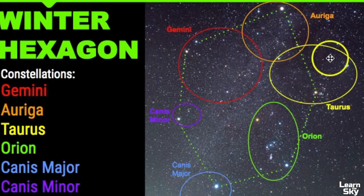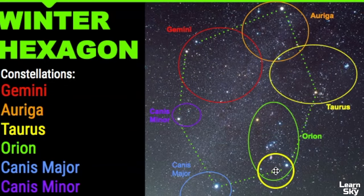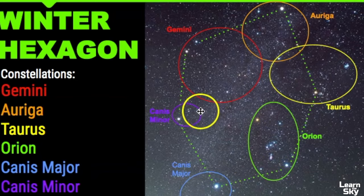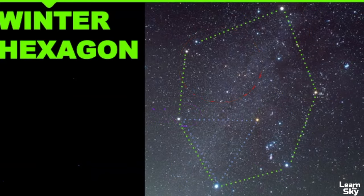We have Gemini, Auriga, Taurus, easily recognizable Orion, only a portion of Canis Major is seen here, and then the two-star Canis Minor. Also notice that the Winter Triangle is also kind of within the Winter Hexagon itself. The Winter Triangle is slightly easier to point out because it's just a smaller portion of the sky.